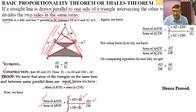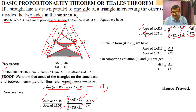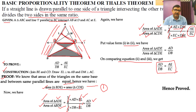So AD/DB equals the ratio of area of triangle ADE to area of triangle BDE. Similarly, area of triangle ADE to area of triangle CDE gives: ½ × AE × DM over ½ × EC × DM — cancel out ½ and DM — giving AE/EC. Since area of triangle BDE equals area of triangle CDE, with ADE in the numerator, we get AD/DB = AE/EC.